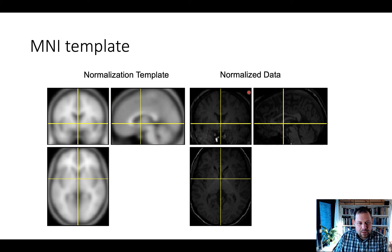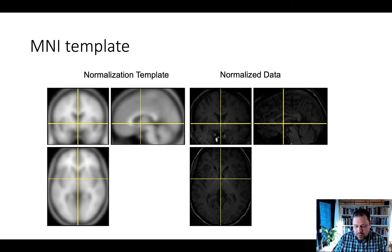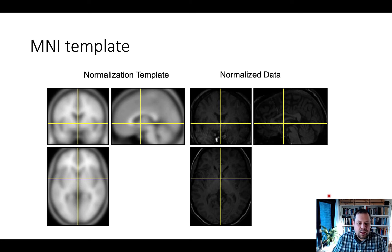Here we can see normalized data on the right and the template on the left, with quite a good match in the front of the brain, the back of the brain, and near anatomical landmarks such as the corpus callosum. SPM uses a relatively new method that uses tissue probability maps to warp the T1 image into not just one template but six different templates.